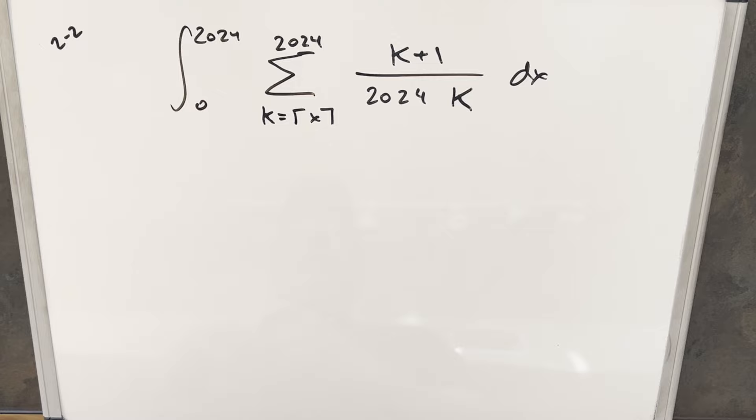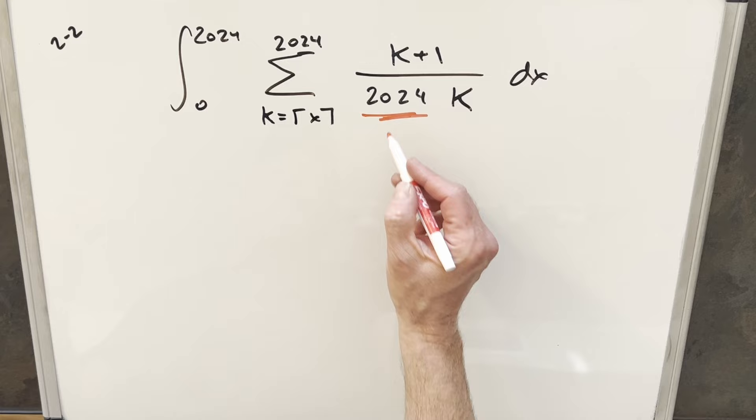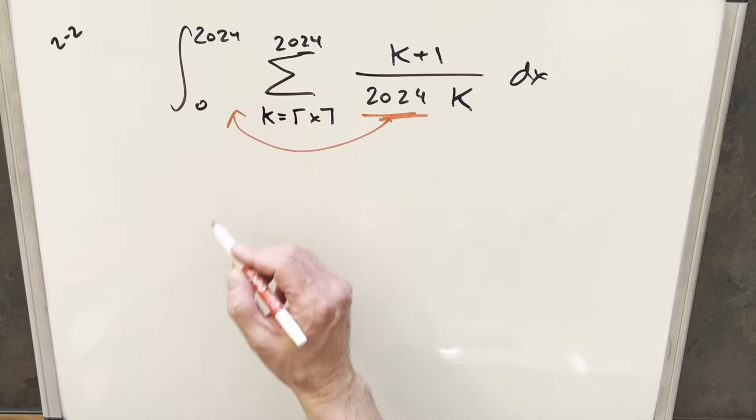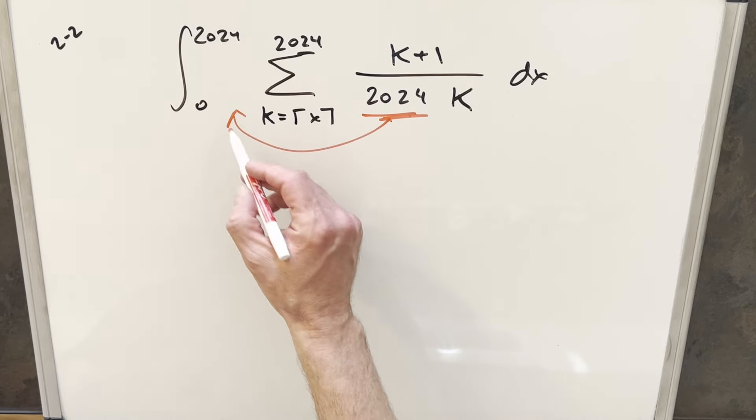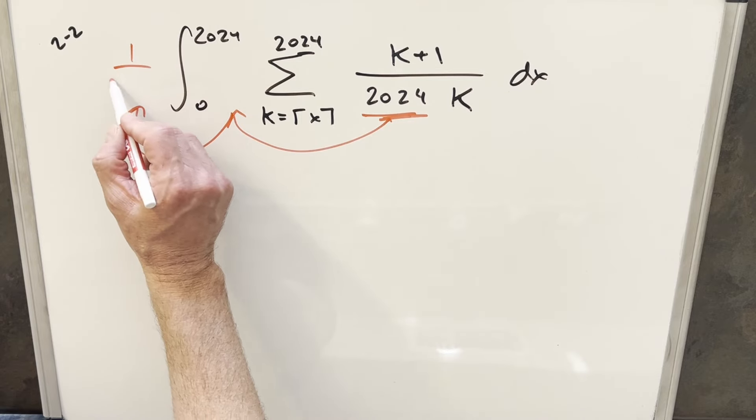To get started with this, before I do anything, I just want to notice 2024 is a constant value. It's got no dependency on k, so we can actually just take this right outside the sum. But again, because it's a constant value, we can take it all the way outside of the integral. So we can actually just have this all the way out here in front.